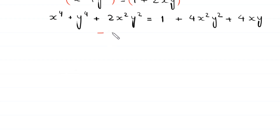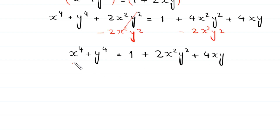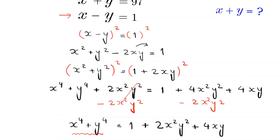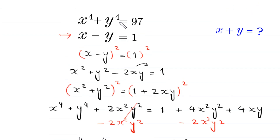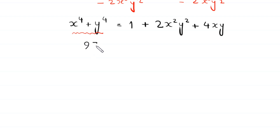Now we subtract 2x squared y squared from both sides. This cancels on the left hand side, leaving x to the power 4 plus y to the power 4 equal to 1 plus 4x squared y squared minus 2x squared y squared plus 4xy, which is 1 plus 2x squared y squared plus 4xy. We replace x to the power 4 plus y to the power 4 with 97, so 97 equals 1 plus 2x squared y squared plus 4xy.